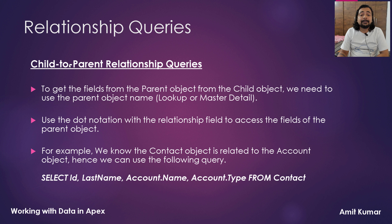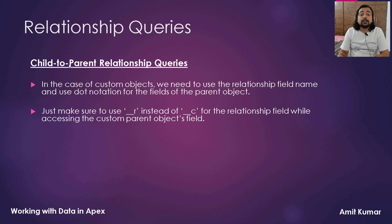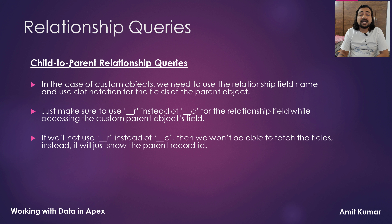SELECT Id, LastName, Account.Name, Account.Type FROM Contact. In the case of custom objects, we need to use the relationship field name and use dot notation for the fields of the parent object. Just make sure to use __r instead of __c for the relationship field name while accessing the custom parent object's field. If we do not use __r instead of __c, then we won't be able to fetch the fields — it will just show the parent record ID.